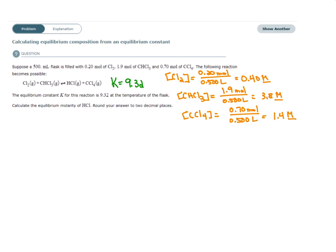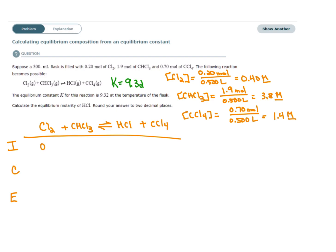We have our initial concentrations. Since the question asks for the equilibrium concentration of HCl, we have to set up an ICE table. The initial concentration of Cl2 is 0.4, the initial concentration of CHCl3 is 3.8. They don't give us any information for the initial concentration of HCl, so we assume it's 0. And for CCl4, it's 1.4.